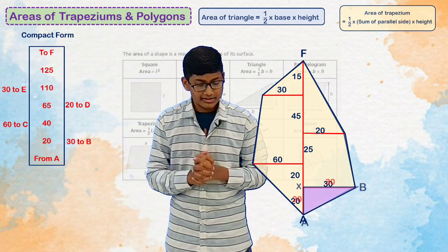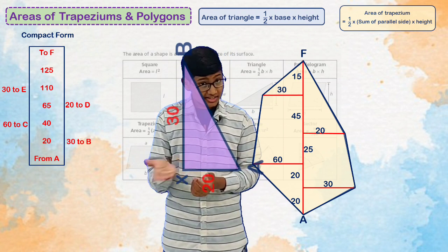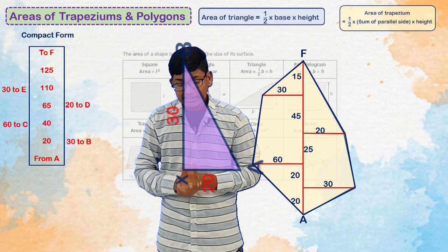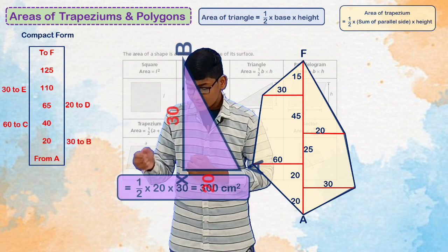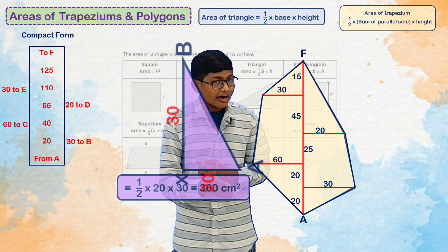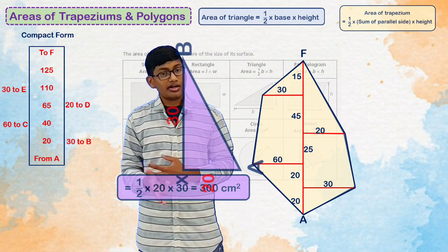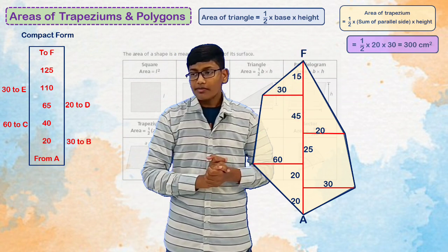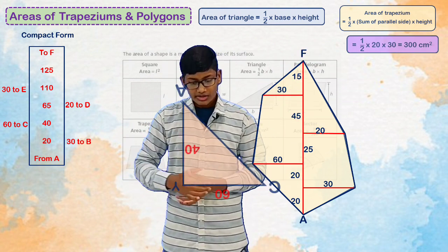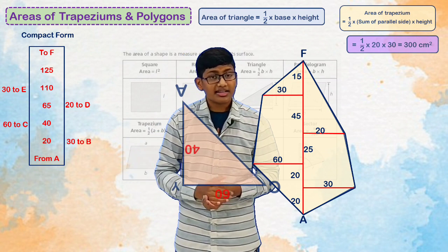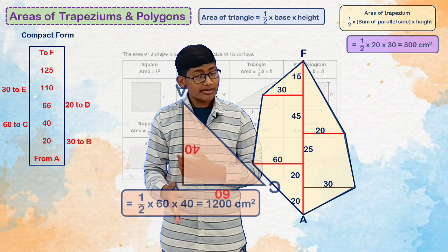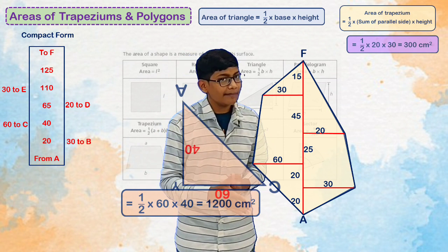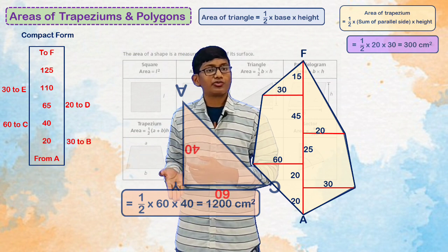First we go for the triangles. The first triangle has base 20 cm and height 30 cm. Calculating half into base into height: half into 20 into 30 gives 300 cm². Now the second triangle has base 60 cm and height 40 cm. Half into 60 into 40 gives 1200 cm².